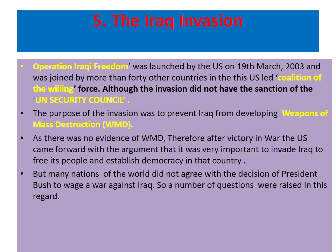The Iraq invasion: the Iraq war was a protracted armed conflict that began in 2003 with the invasion of Iraq by a United States-led coalition that overthrew the government of Saddam Hussein. The conflict continued for much of the next decade as an insurgency emerged to oppose the occupying forces. Americans were told by President Bush that the US was going to war with Iraq because of the imminent threat of Saddam's weapons of mass destruction and ties to terrorism. Operation Iraqi Freedom was launched on 19 March 2003 and was joined by more than 40 countries. The purpose was to prevent Iraq from developing weapons of mass destruction, though the invasion did not have the sanction of the UN Security Council.